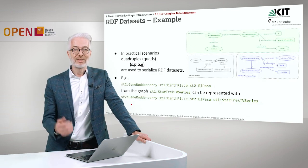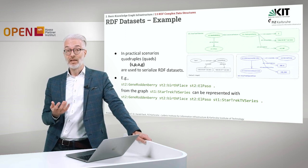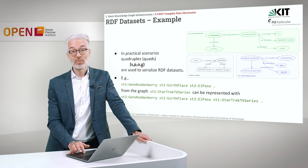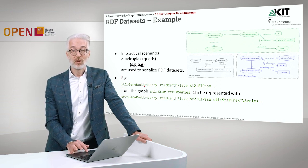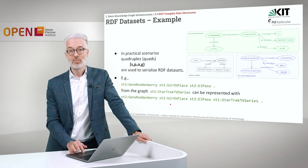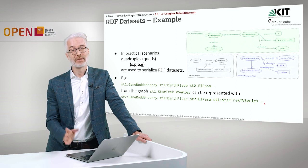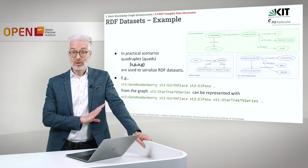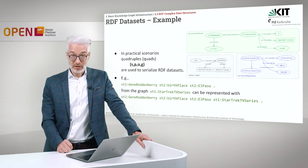If you want to write or use RDF datasets, you have to use the identifier — the name of that graph. We end up in a so-called quadruple scenario: instead of triples, with RDF datasets you use quadruples. The triple is expanded by a graph name. For example, looking at the green graph: Gene Roddenberry, birthplace, El Paso — as the fourth component, the name of the graph is ST1, Star Trek TV series. That is the definition of RDF datasets. Keep in mind that not all RDF parsers might accept exactly this kind of semantic structure.